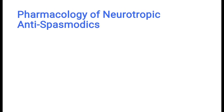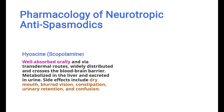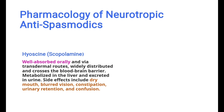Now we'll explain the pharmacology of neurotropic antispasmodics with examples. First, hyoscine: it is well absorbed via transdermal routes, widely distributed, and crosses the blood-brain barrier. It is metabolized in the liver and excreted through urine. Side effects include dizziness, dry mouth, blurred vision, nausea, constipation, urinary retention, and confusion.